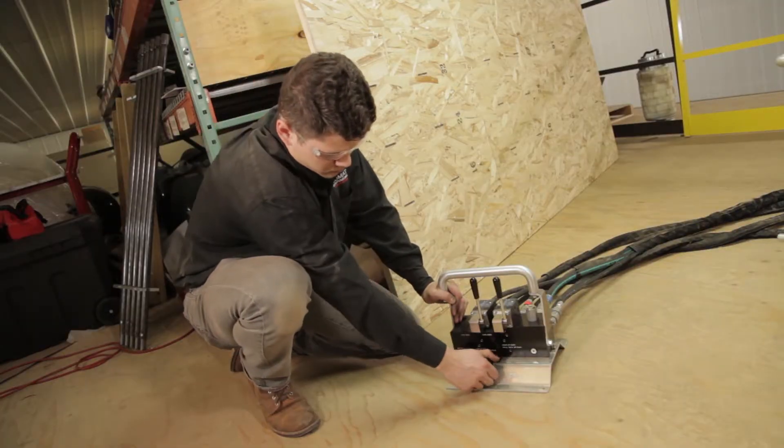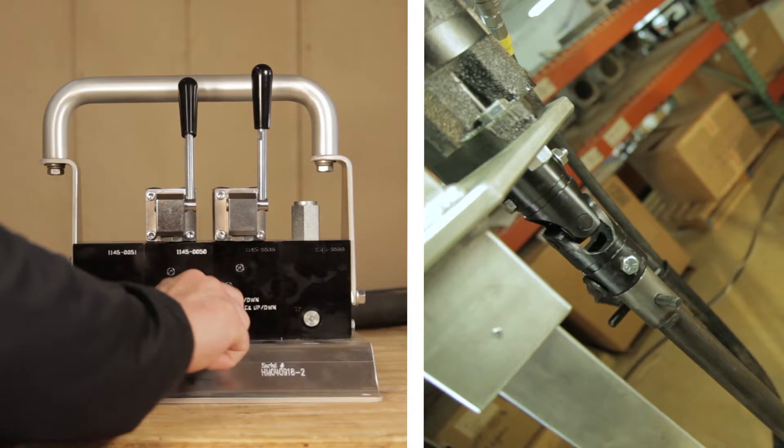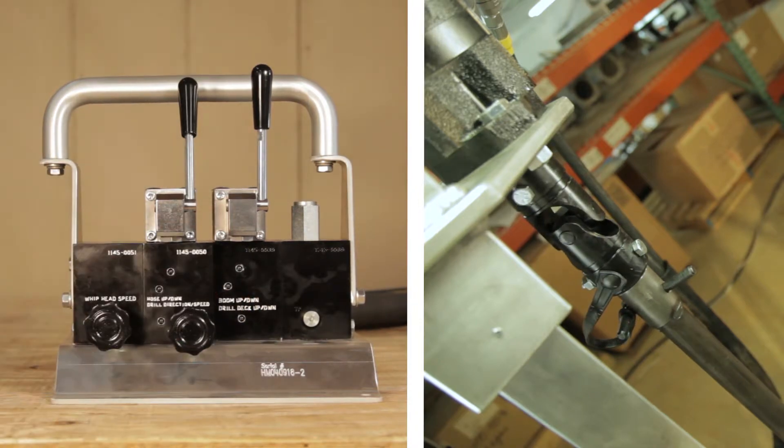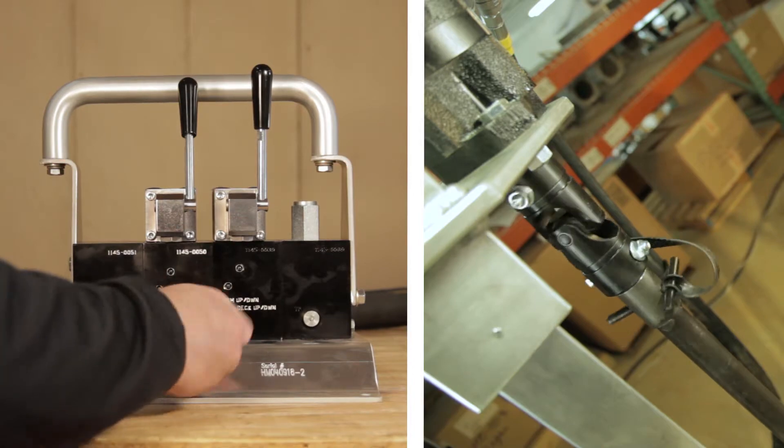This block also includes a flow control knob. When the hydraulic hoses are hooked up in the standard way, turning this knob clockwise all the way in slows and ultimately stops the clockwise rotation of the drill, while opening it counterclockwise speeds up the rotation.